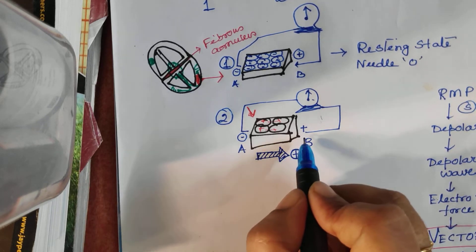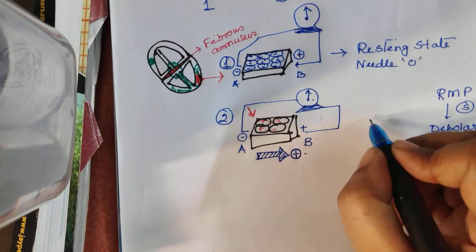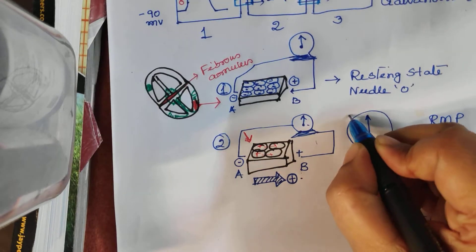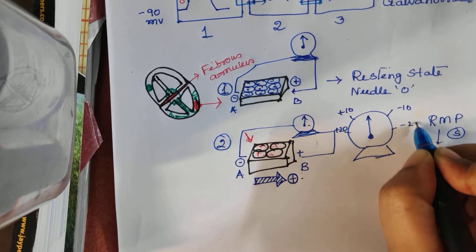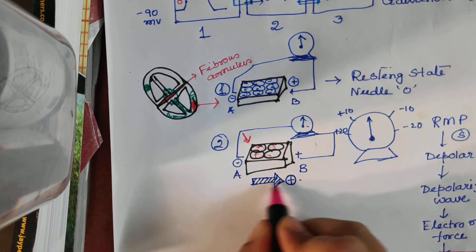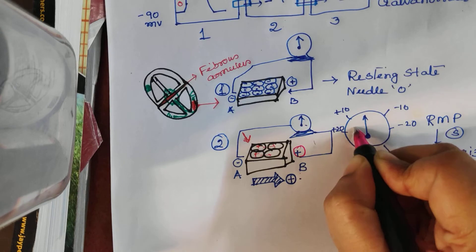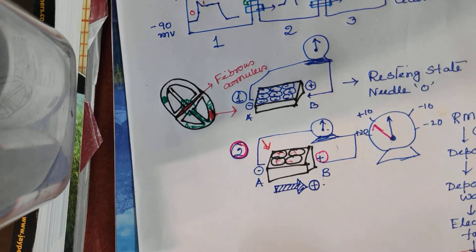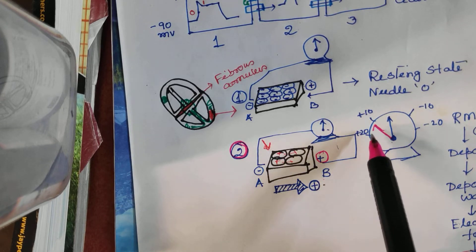The positively charged depolarizing wave is moving toward the positive electrode at point A. What will the deflection of the galvanometer be? When a positively charged wave or depolarizing wave moves toward a positively charged electrode, the deflection will be positive. This is our second condition: a positively charged depolarizing wave moving toward a positive electrode causes a positive deflection.